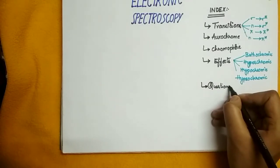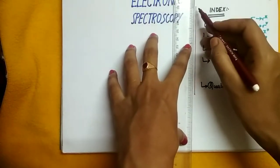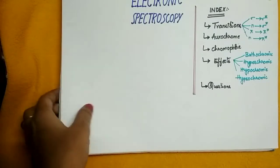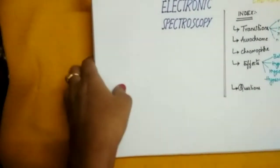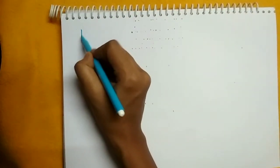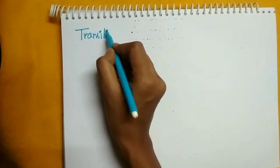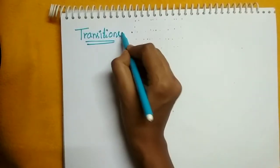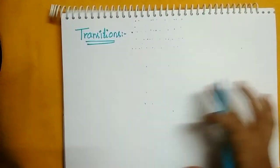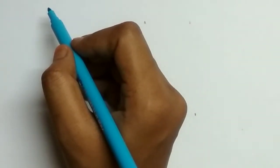Later we will also discuss questions on this. Let us draw a line to differentiate — this is the index we are going to discuss in this video. We are learning about the four types of transitions, and we will differentiate them in four boxes so we can easily remember what we are learning.